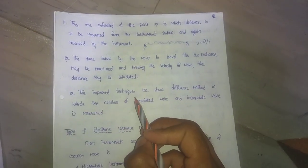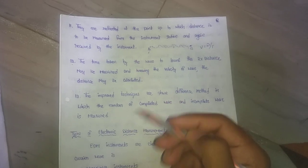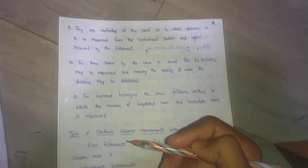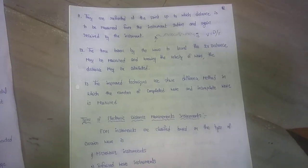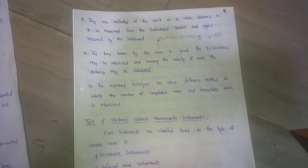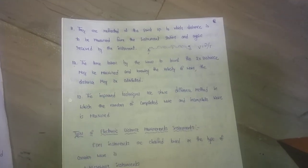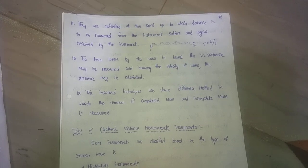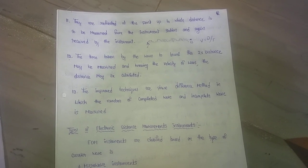The improved technique uses phase difference. This next advanced method is used to determine distance in short-range conditions and uses a phase difference method, in which the number of completed waves and incomplete waves is measured.